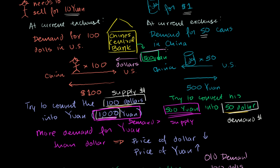You have 1,000 yuan, 500 here and 500 here, that want to be converted into dollars. And then you have $100 that want to be converted into 1,000 yuan. So if they were to do this, the currency wouldn't change. The exchange rate wouldn't change. The supply and demand of the two currencies would be equal.